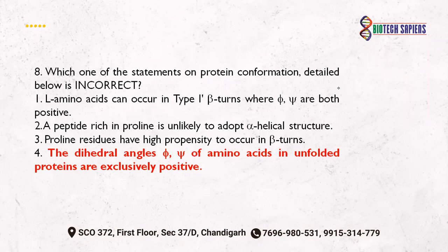Which statement on protein conformation is incorrect? Statement A: L amino acids can occur in type 1 beta turns where both angles can be positive — this is acceptable. Statement B: a peptide rich in proline is unlikely to adopt an alpha helical structure — proline does not favor alpha helix formation, so this is correct. Statement C: proline residues have high propensity to occur in beta turns — we saw this in the previous question. Statement D: the dihedral angles of unfolded proteins correspond to plus-plus combinations, implying left-handed alpha helix — this fourth statement is incorrect.